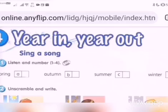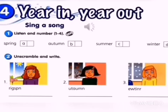You have to put one, whether it's A, B, C or D — you put one, two, three. Listen carefully. Year in, year out. Sing a song. Activity one: Listen and number one to four.